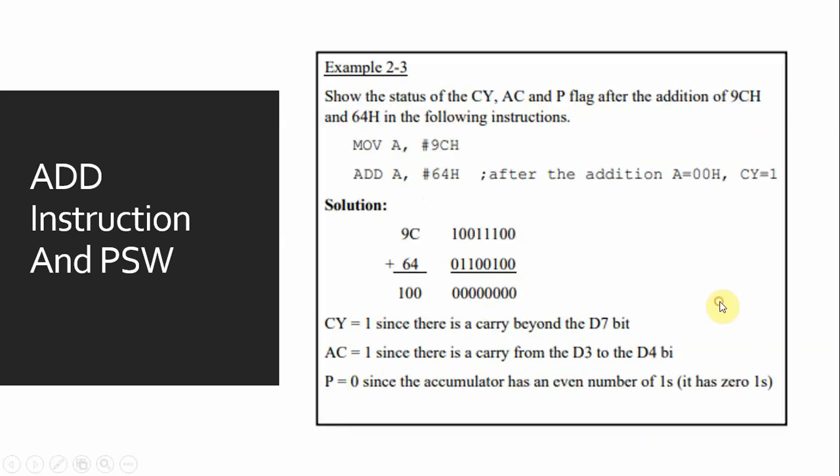In this example, show the status of CY, AC, and P flag after the addition of 9Ch and 64h. The instruction will be MOV A, 9Ch and ADD A, 64h. The sum will be 100h.